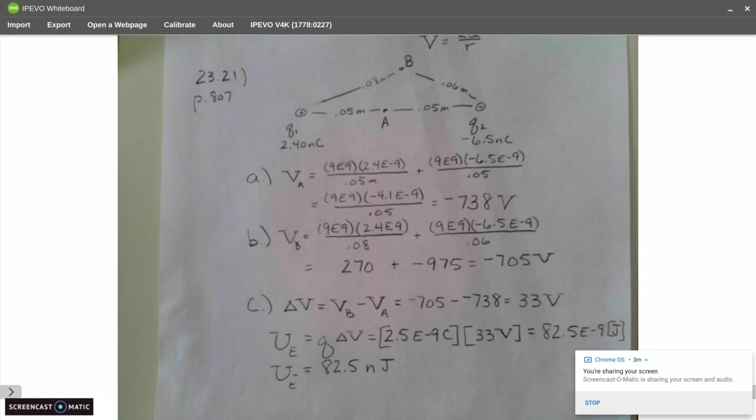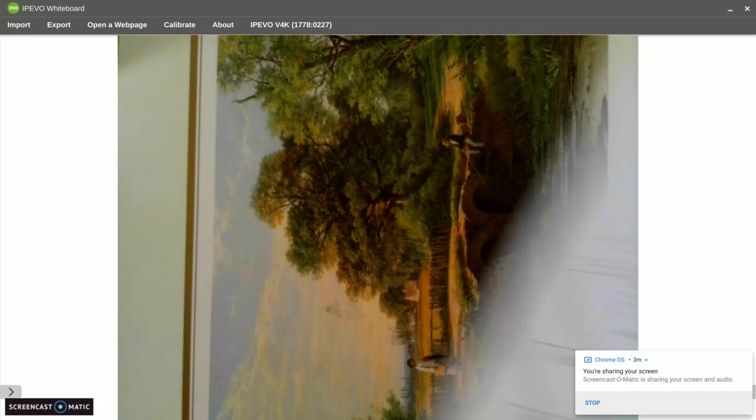And now I can finally find the potential energy or the amount of work it takes to go from A to B. And if I multiply that correctly, that is 82.5 nanojoules.